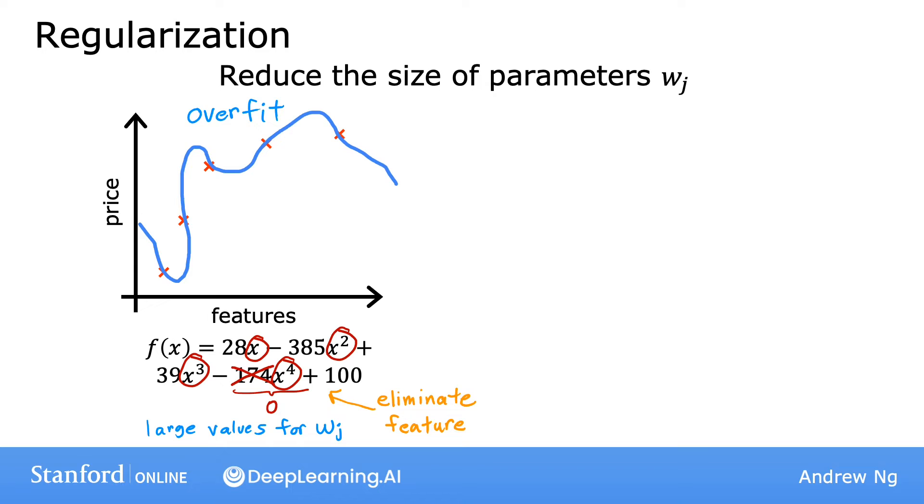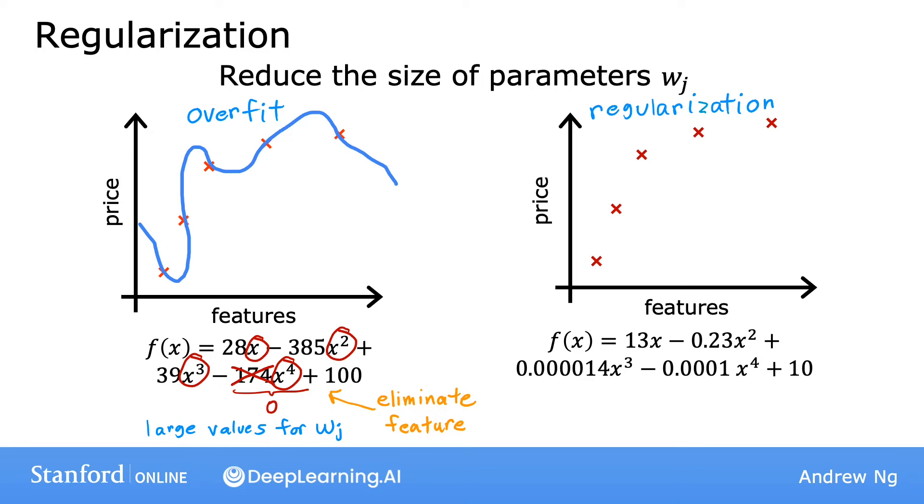It turns out that regularization is a way to more gently reduce the impacts of some of the features without doing something as harsh as eliminating it outright. What regularization does is encourage the learning algorithm to shrink the values of the parameters without necessarily demanding that the parameter is set to exactly zero. And it turns out that even if you fit a high-order polynomial like this, so long as you can get the algorithm to use smaller parameter values w1, w2, w3, w4, you end up with a curve that ends up fitting the training data much better. So what regularization does is it lets you keep all of your features, but it just prevents the features from having an overly large effect, which is what sometimes can cause overfitting.